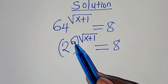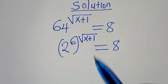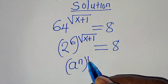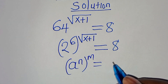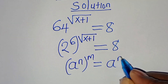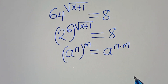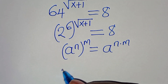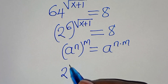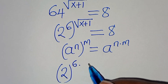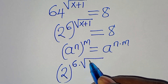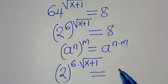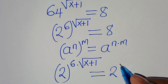Now, 2 to the power of 6 to the power of square root of x plus 1 is in the form of a to the power of n, to the power of m, which we can express as a to the power of n multiplied by m. Applying this exponential property, we have 2 to the power of 6 multiplied by square root of x plus 1, this is equal to 8, which is 2 to the power of 3.